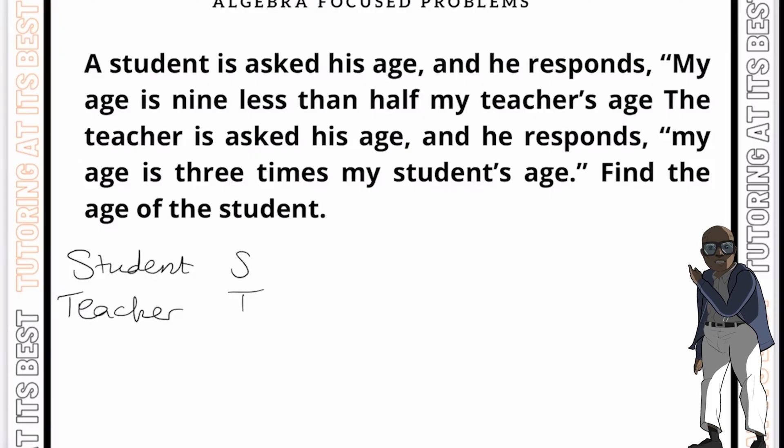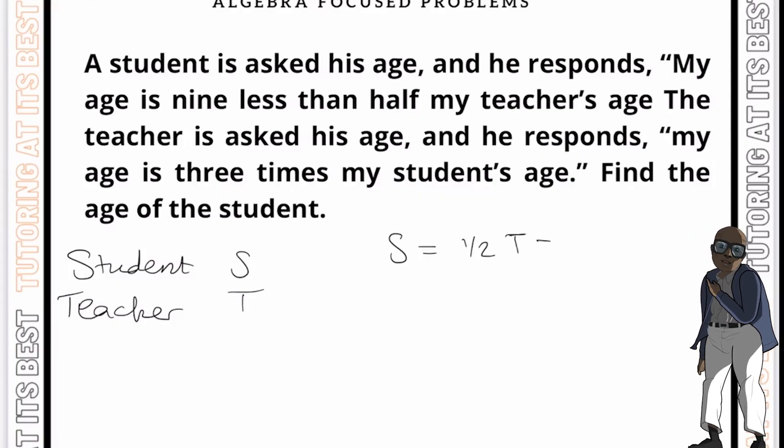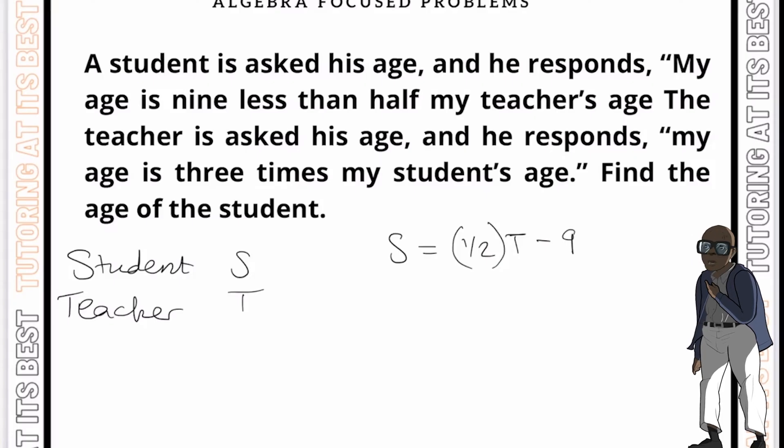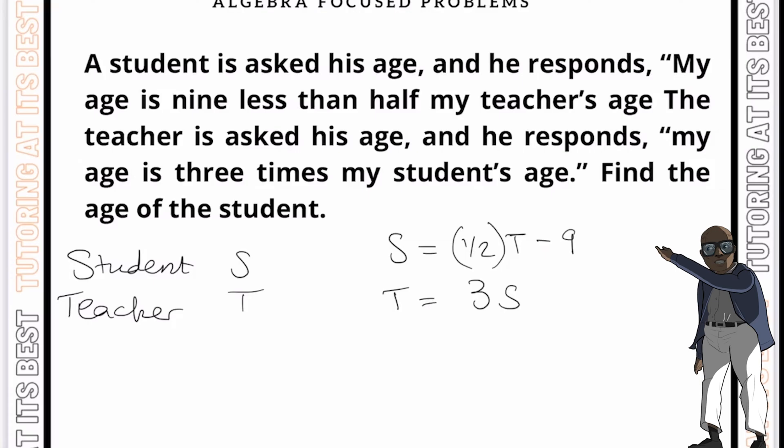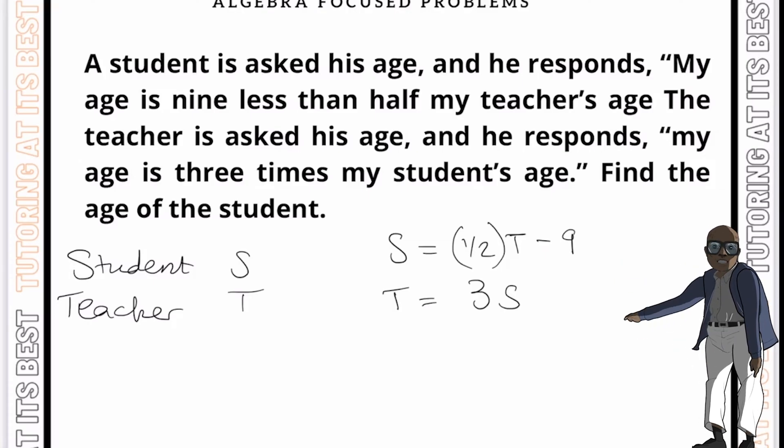From the first sentence, we can write an equation, which is the student will equal half of the teacher minus nine. And from the second sentence, we can also write an equation, which is that the teacher equals three multiplied by the student's age.